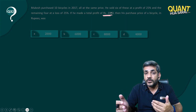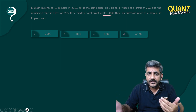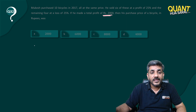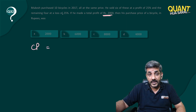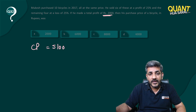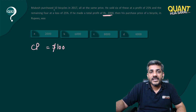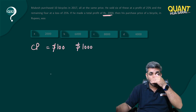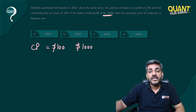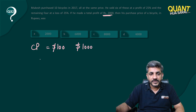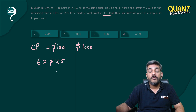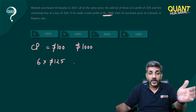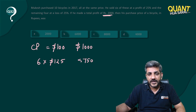Let us say the cost price of one bicycle is 100 dollars. He purchased 10 bicycles, so that is a total cost of 1000 dollars. He sold six of these at a profit of 25 percent, so six of them are sold for 125 dollars each. 125 into 6 is 750 dollars.